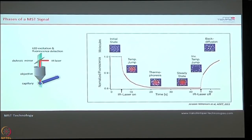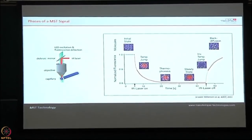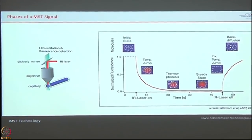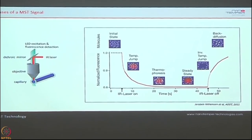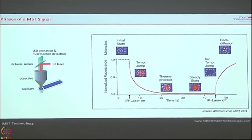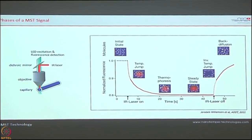Looking at the typical signal: you fix one partner and titrate the second. For the first 5 seconds, all molecules are uniformly distributed. The moment you turn on the IR laser, all molecules move away from the heat and within 30 seconds attain a steady state. For 30 seconds the laser is on, and after that you turn the laser off. Since there is a fluorophore, there will be a regaining of fluorescence and your signal shoots back up.